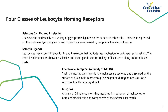The vast majority of leukocyte homing receptors belong to one of four classes: the selectin, selectin-ligand, integrin, and G protein-coupled receptor families. Members of each family play distinct roles in the cascade of events occurring when leukocytes migrate from one tissue compartment to another. Selectins bind weakly to a variety of glycoprotein ligands; L-selectin is expressed on lymphocytes, while E- and P-selectin are expressed by peripheral tissue endothelium. Leukocytes may express ligands for E- and P-selectin that facilitate weak adhesion to peripheral endothelium, leading to rolling along endothelial cell beds. Chemokines are secreted and displayed on tissue cell surfaces to guide migration during homeostasis or in response to inflammatory stimuli. Integrins are a family of 24 heterodimers that mediate firm adhesion of leukocytes to endothelial cells and components of the extracellular matrix.